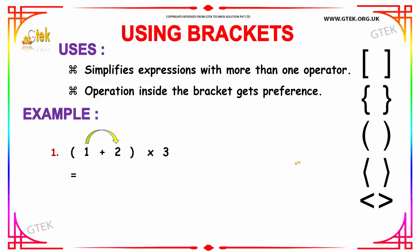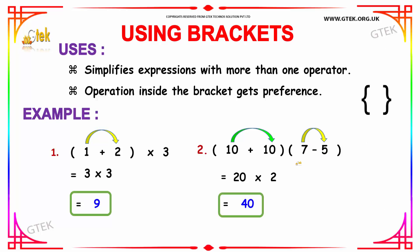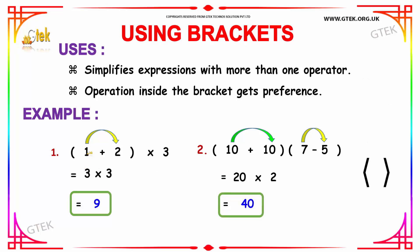Let us see a few examples to illustrate this. Here, this series of operations has a bracket over two terms. First, we will be adding 1 and 2 to get the answer as 3, which will then be multiplied with the third operand, also 3. So 3 into 3 gives the value 9.